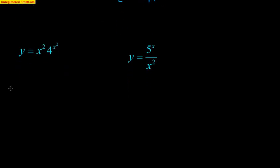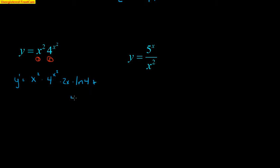We have two things being multiplied here, so we recognize this as a product. Using the product rule, the derivative is going to be the first — x squared — times the derivative of the second. Here we write the exact same thing: 4 to the x squared times the derivative of the exponent times the natural log of the base, plus the second — 4 to the x squared — times the derivative of the first, which is 2x.